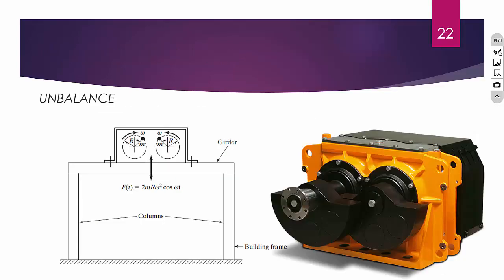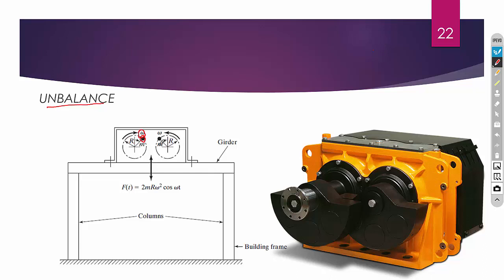The next type of mechanical exciter uses unbalance. We know that unbalance produces vibration, so if you create unbalance artificially it will automatically generate vibration. An unbalance mass m is placed with an eccentricity of r, and the system rotates with an angular velocity omega. The magnitude of the unbalance force is m₀·e·ω². So unbalance is used here to produce the vibration.